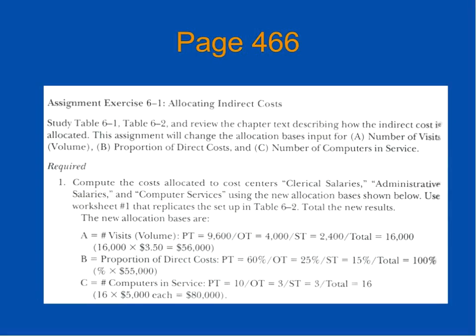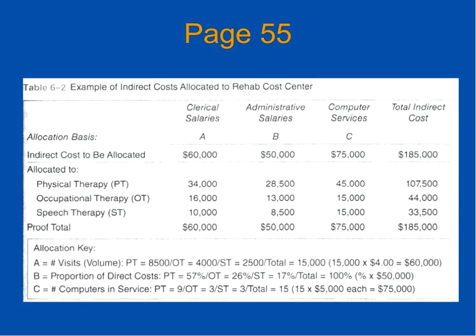If we turn to page 466 of your textbook, the fourth edition of Baker and Baker, you'll see assignment exercise 6-1, allocated indirect costs. What you're being asked to do here is to use the information on page 466 to build a new table that looks like the table on page 55.